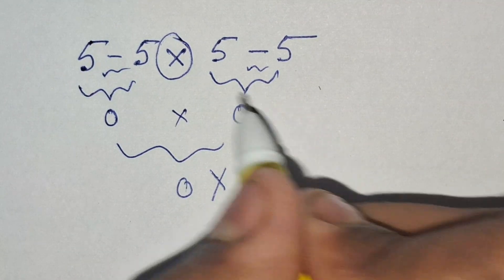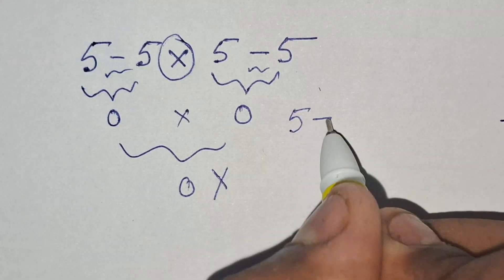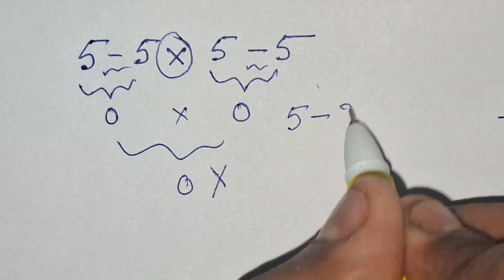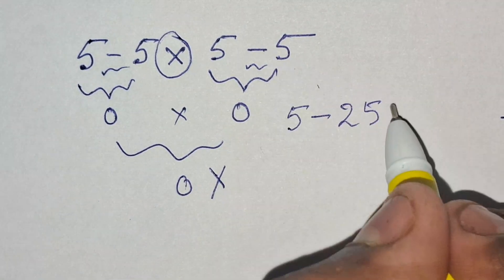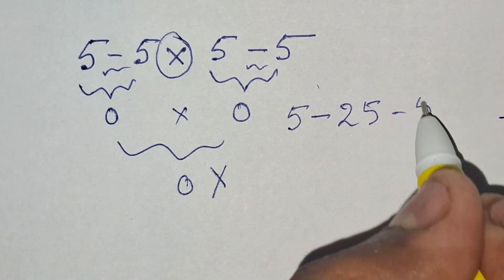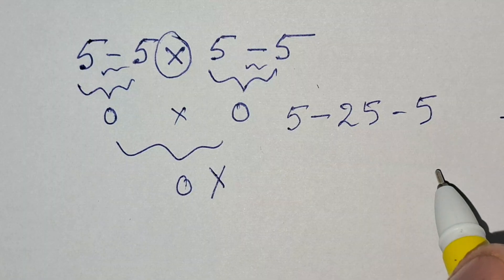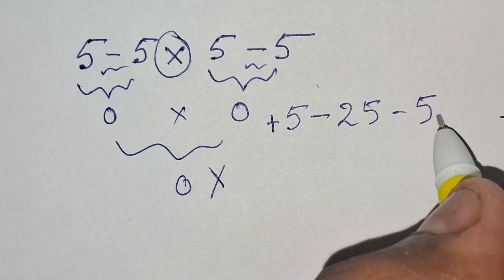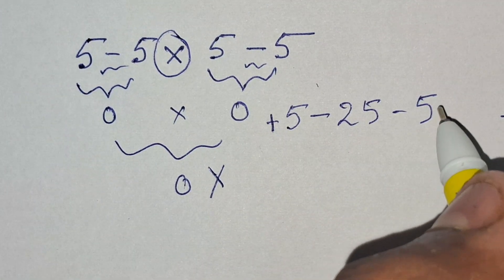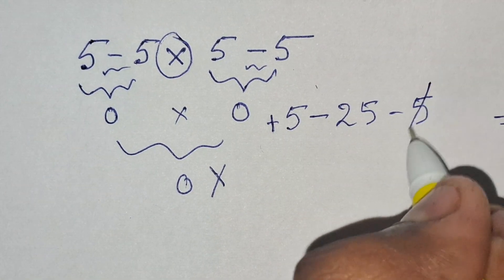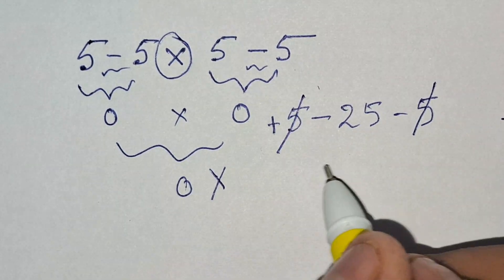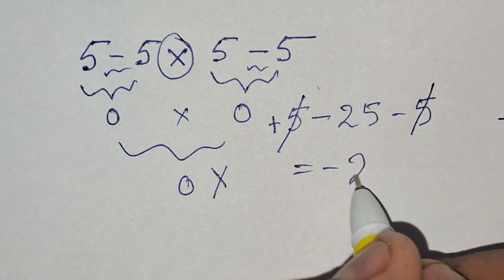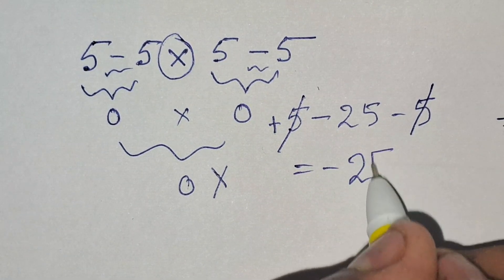First, 5 times 5 is equal to 25, so the expression becomes 5 minus 25 minus 5. You can say that the plus 5 and minus 5 cancel, so our answer becomes minus 25.